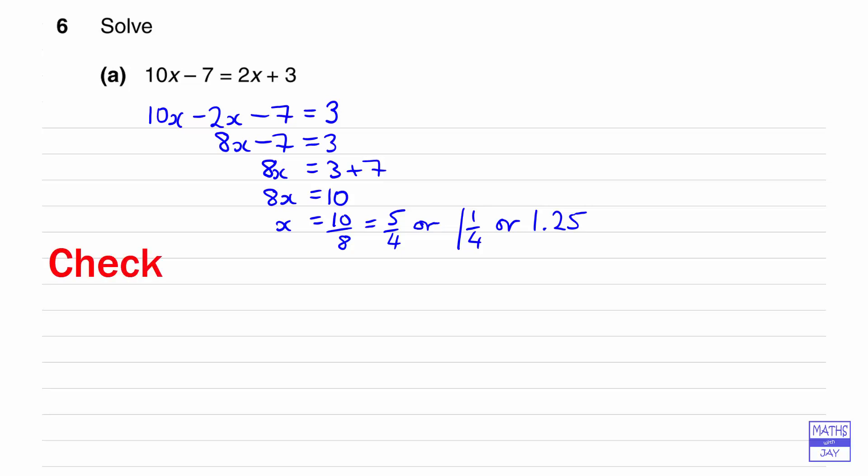And we want to check this. So if we worked out the answer correctly, we should find that 10 times our value of x minus 7 comes out to exactly the same as 2 times our value of x plus 3. In other words, we're looking at the original equation and we're evaluating the left-hand side. So the left-hand side will be 10 times 1.25 minus 7, so that's 12.5 minus 7, so that's 5.5.